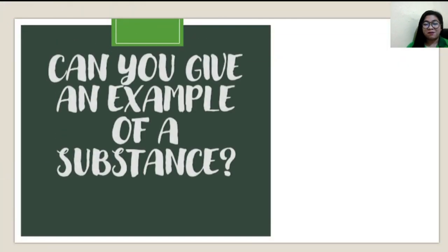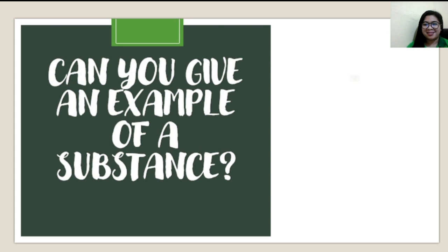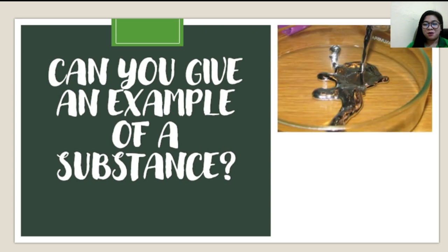Let's look at another example of a substance. We have liquid mercury, which is used in traditional thermometers and also in light bulbs, though it is dangerous. We also have gold, which is used for jewelry making.